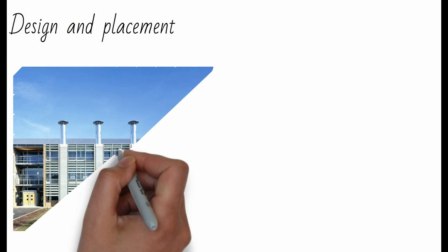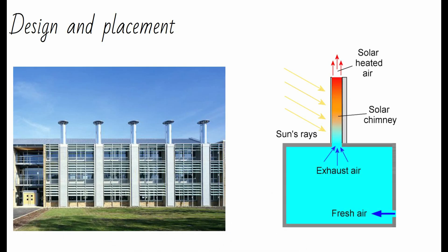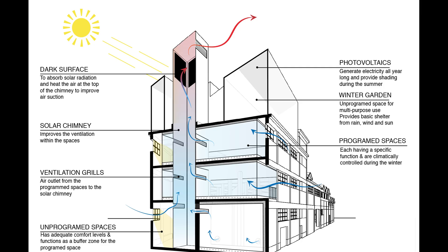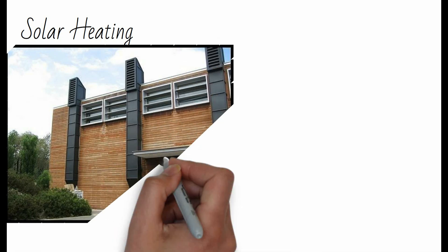Thermal chimneys are typically integrated into the design of buildings. They consist of a vertical shaft or duct that extends from the interior of the building to the exterior, usually extending above the roofline. The location and orientation of the chimney are carefully planned to maximize solar exposure and airflow.